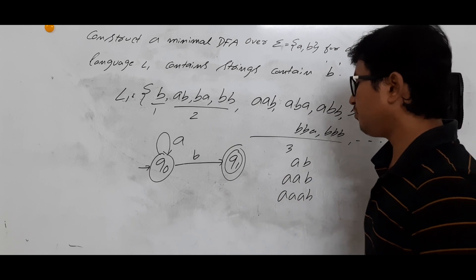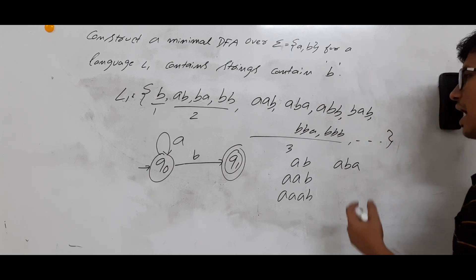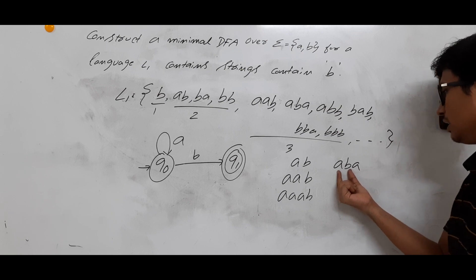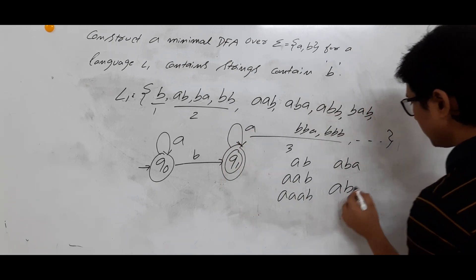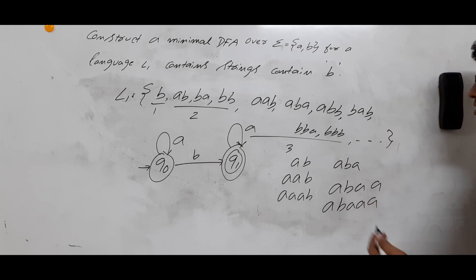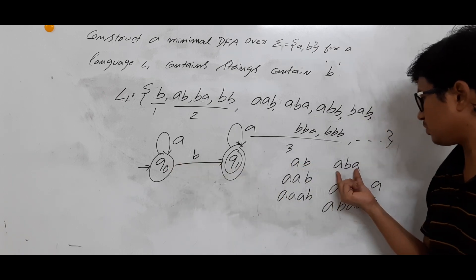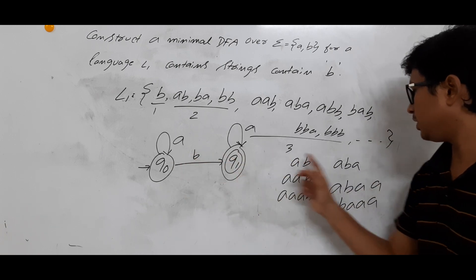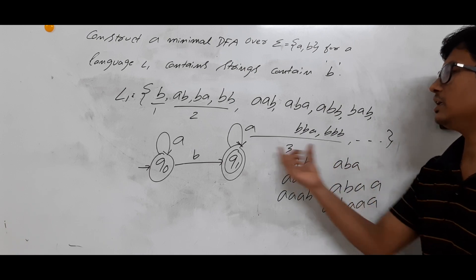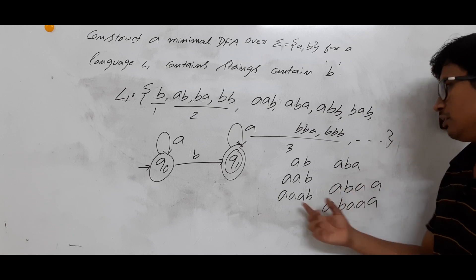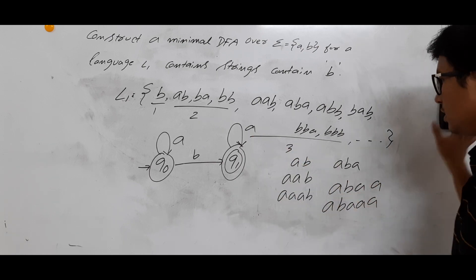Now from q1, if I read more input: aba should be accepted because it contains b. Strings like aba, aaba — all these should be accepted. So from q1 on a you go to q1. This means even strings like abaa will be accepted because once you reach q1, on a you stay at q1, which is the final state.